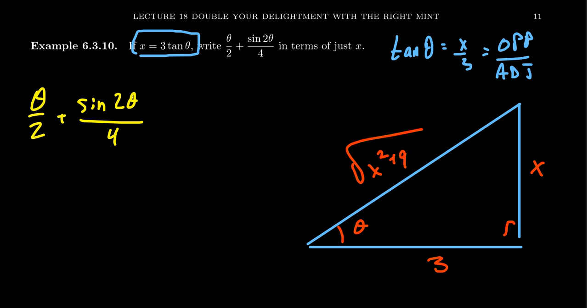With this right triangle diagram, we can compute sine of theta, cosine of theta, tangent theta — we already know that one — cotangent theta, secant theta, and cosecant theta, all with regard to the angle theta. The issue here is we have to compute sine of 2 theta. We can use a double angle identity to help us out — it makes life so much easier.